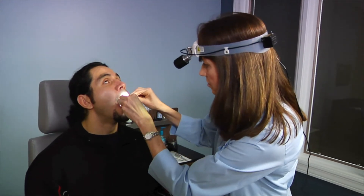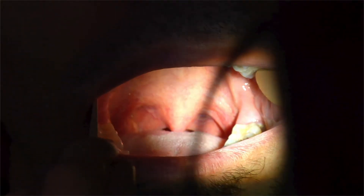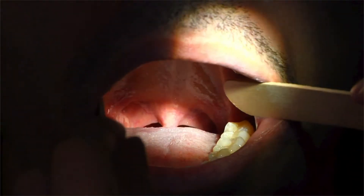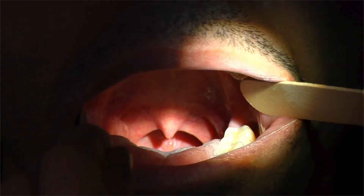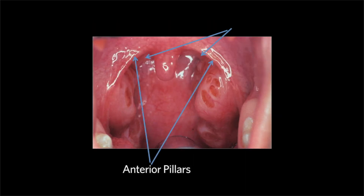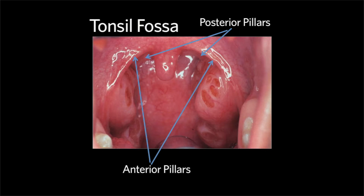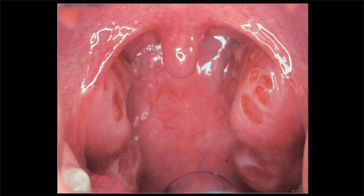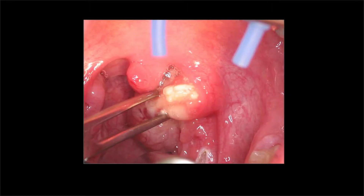We'll check your tonsils and the back wall of your throat. Laterally, below the soft palate, sit the palatine tonsils. There is an anterior and posterior pillar that makes up the tonsil fossa. The tonsils are pink, should be symmetric, and are often cryptic. There may be debris in the tonsil, which some patients think is food, but is actually known as a tonsillolith.